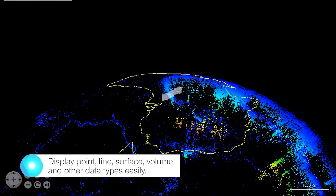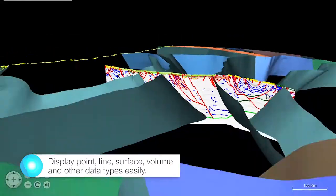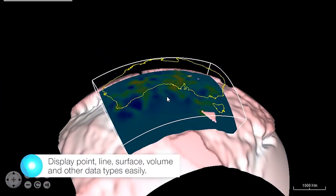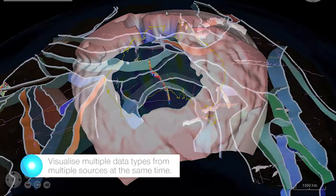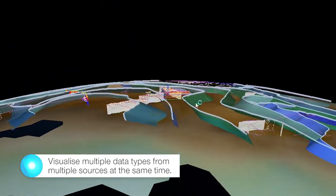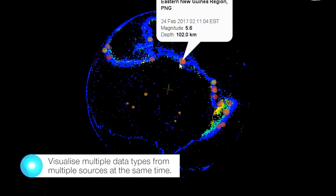Display point, line, surface, volume and other data types easily and visualize multiple data types from multiple sources all at the same time.